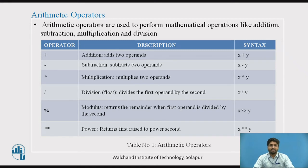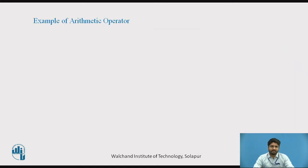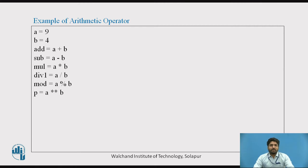Let us see an example: I have taken a variable a equal to 9 and b equal to 4. Then I have taken one more variable add, then I want to do the addition of these two numbers (a plus b), subtraction of two numbers (a minus b), then multiplication followed by division, then modulus.